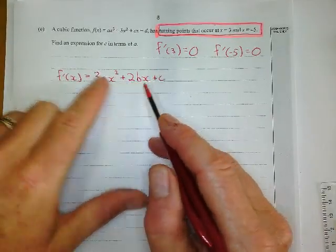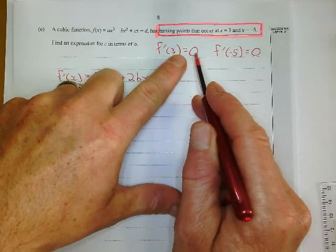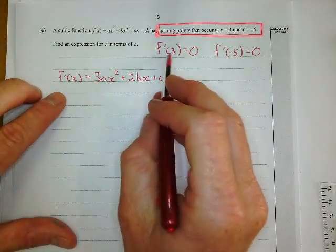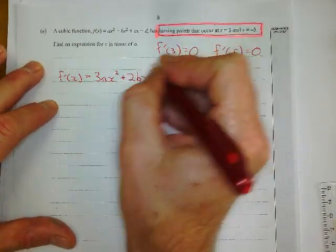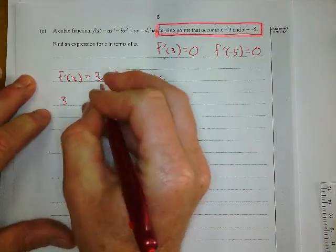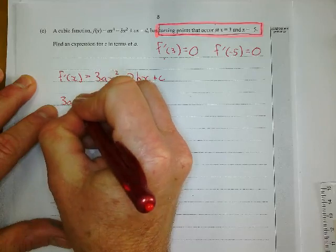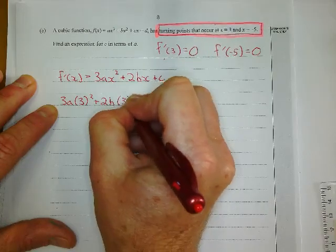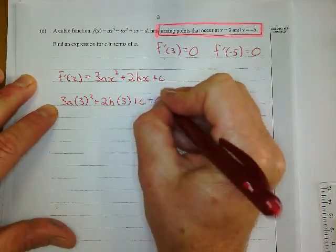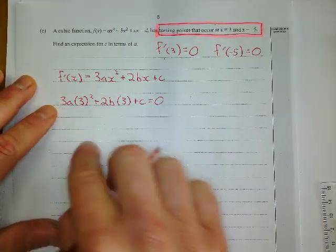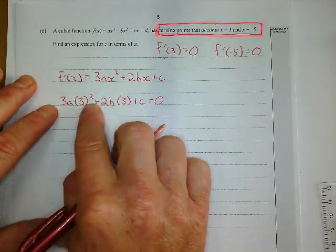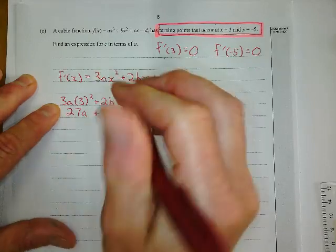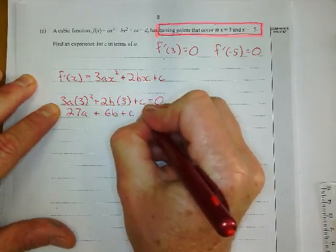So what I did next is I go, they told me here that at x equals 3, it's going to equal, the derived equation is going to equal 0. And at x equals negative 5, it's going to equal 0. So I just substituted this in for x. I went, so I'll do 3 first, and I'll say, when I substitute 3 in for x, 3a times 3 squared plus 2b times 3 plus C, it's going to equal 0, because it told me it was a turning point. And I simplify this, and I don't really get an answer, but I get an expression. So 3 squared is 9, 9 times 3, this is 27a plus 6b plus C equals 0. Can't do anything there, I'm done.